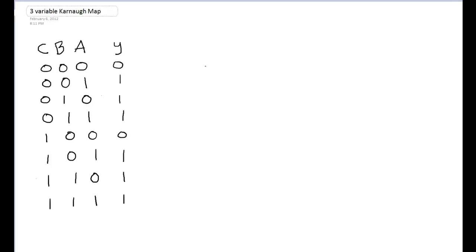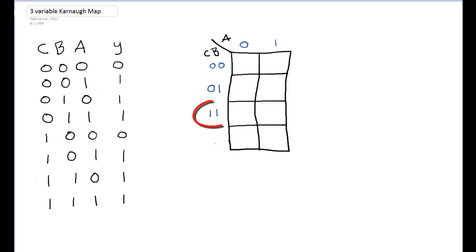So the first thing I'm going to do is draw the map. If we look at our truth table, we have three variables, so we have eight possible combinations. So our Karnaugh map is going to comprise of eight cells. When you move from one cell to any other adjacent cell, only one bit changes. You can almost think of it like a gray code.